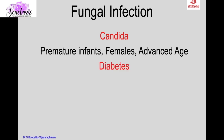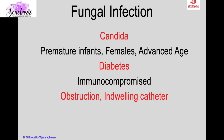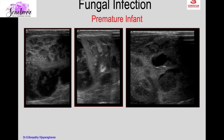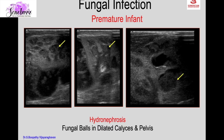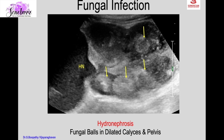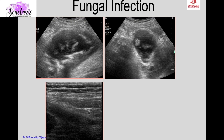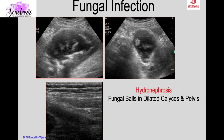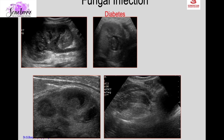Fungal infection is usually due to Candida albicans, occurring in premature infants, females, advanced age, diabetics, immunocompromised patients with obstruction, and patients with indwelling catheters; patients are usually asymptomatic. A premature infant shows hydronephrosis and fungal balls in the dilated calyces and pelvis with perinephric abscess also containing fungal balls. A diabetic with obstruction shows hydronephrosis with multiple large fungal balls filling the dilated calyces and pelvis, very characteristic of fungal infection.